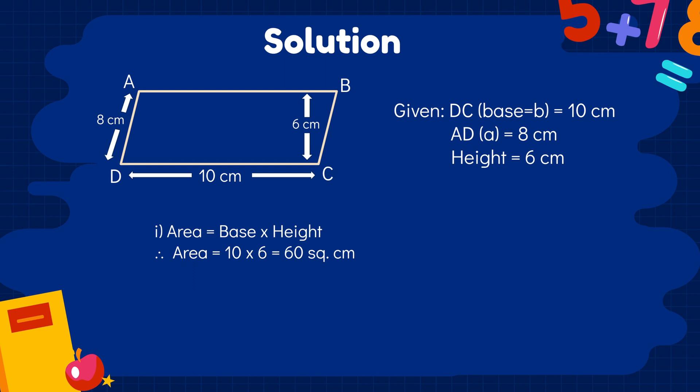To calculate the perimeter, we will add the adjacent sides 8 and 10 and then multiply the sum by 2. So, 2 x (8 + 10) will give us 36 cm.